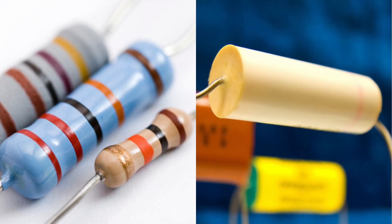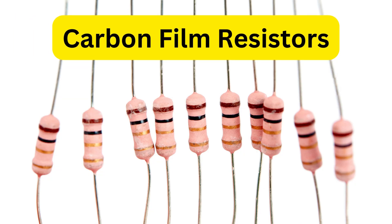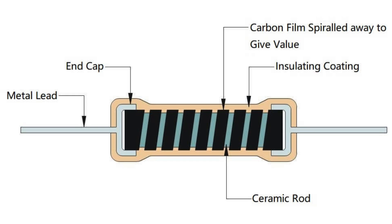There are many types of resistors, each with its own characteristics. Let's explore a few common ones. Carbon film resistors are the most common and inexpensive, made by depositing a thin layer of carbon onto a small, hollow ceramic cylinder using a process called deposition.